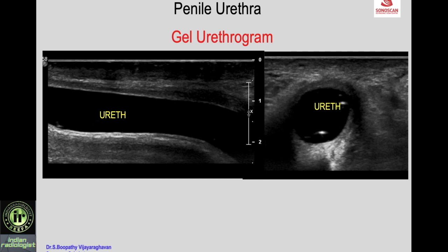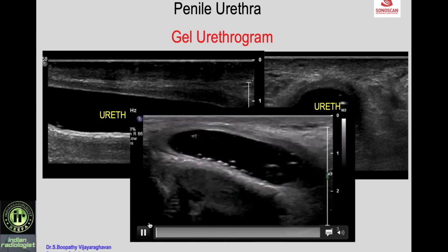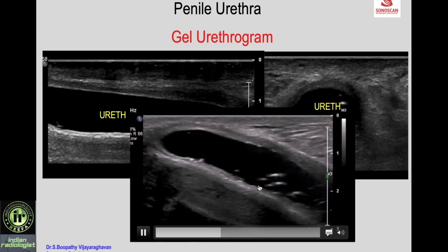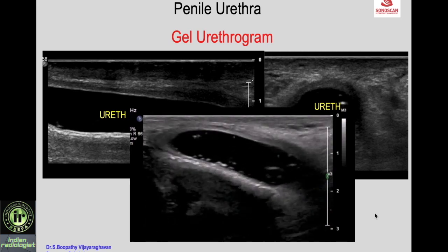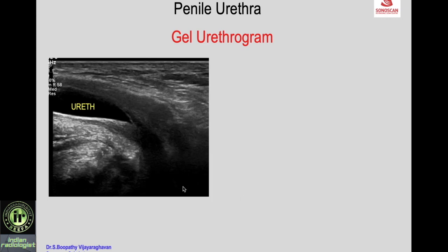The penile urethra can also be studied by gel urethrogram — distending it with gel. The nozzle of lubricating gel is placed at the external urethral meatus and the tube is squeezed so gel enters and distends the urethra. On the normal urethra you see the lumen and walls clearly on longitudinal and axial scans. Pathologies that can be picked up include stricture — narrowing with wall thickening as seen on retrograde urethrogram on X-ray.